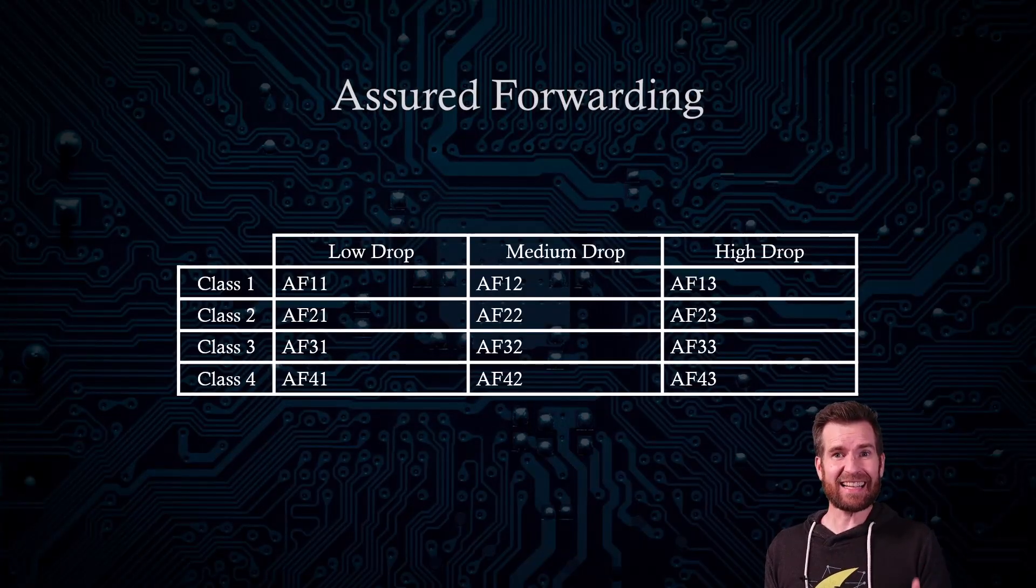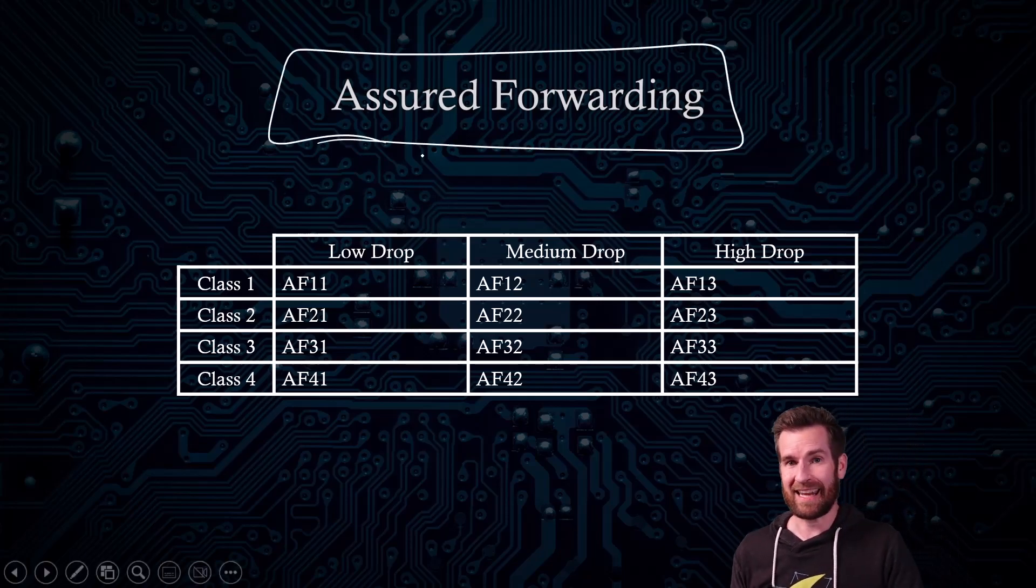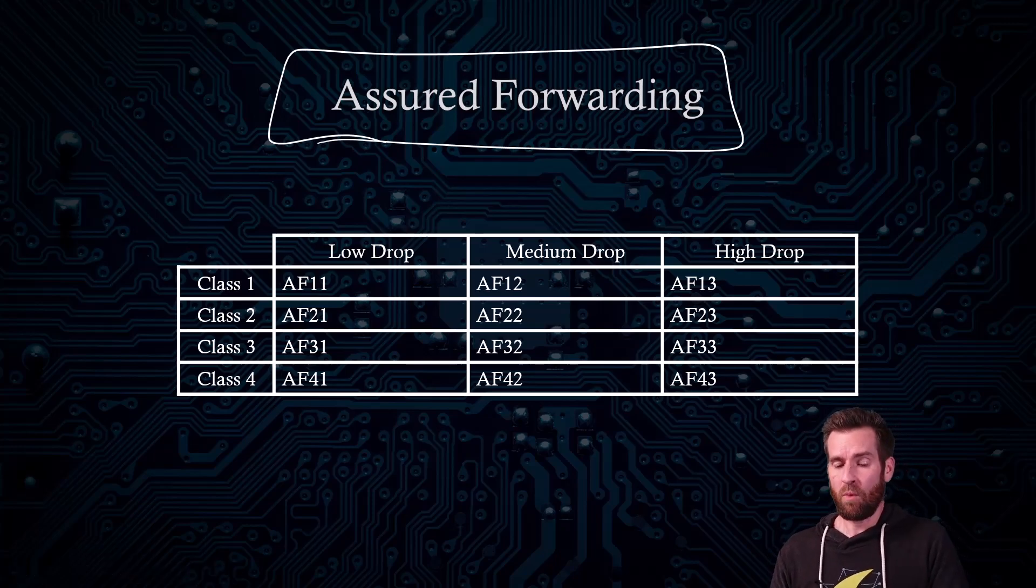So since the class selector really doesn't add much to our DSCP field, we have to create a different standard for that. So that's where assured forwarding comes in. It adds on some more granularity in how we prioritize our traffic.